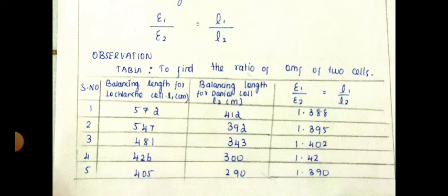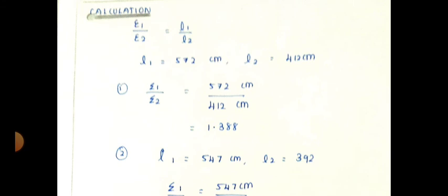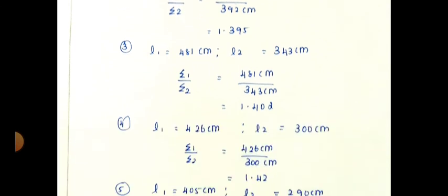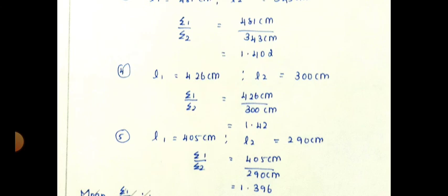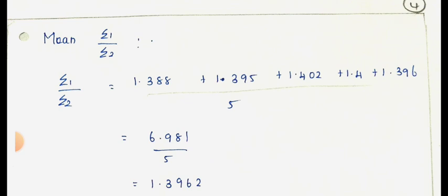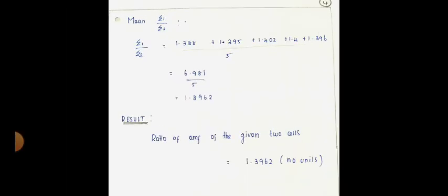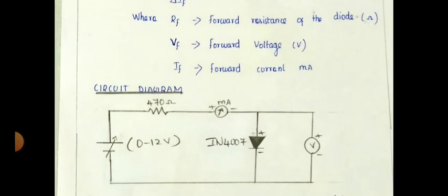The observation table has columns for readings. If the examination asks only four readings, write four alone — that's enough. The calculation is simple: e1 by e2 equals l1 by l2; substitute the values, the centimeter units cancel, so e1 by e2 is a mere number with no unit. Write all five readings, add them up, and divide by five to get the mean. The mean ratio of the EMF of the two given cells is 1.3962.